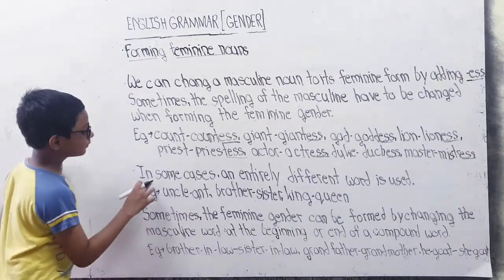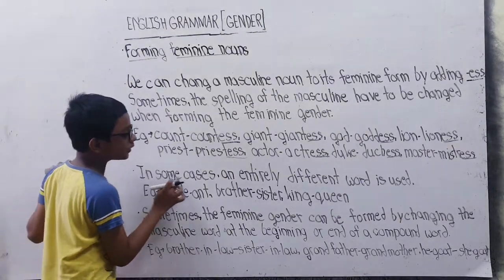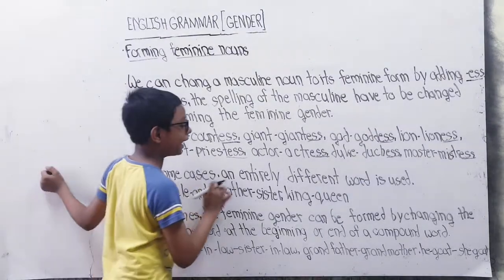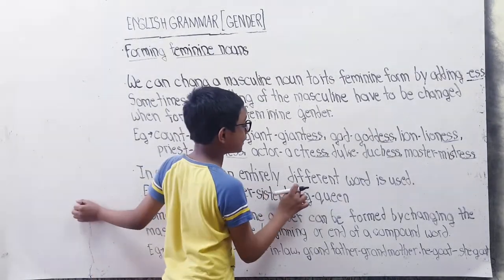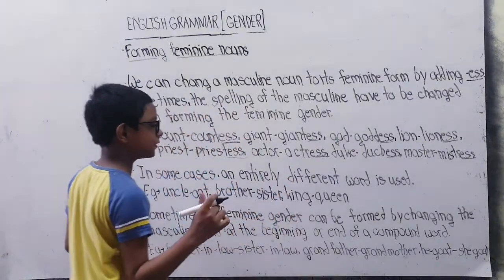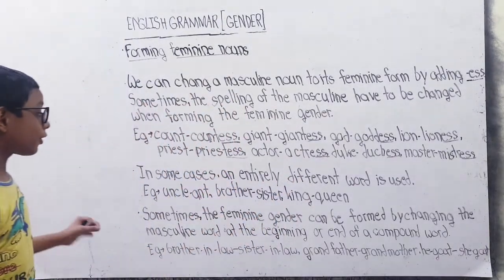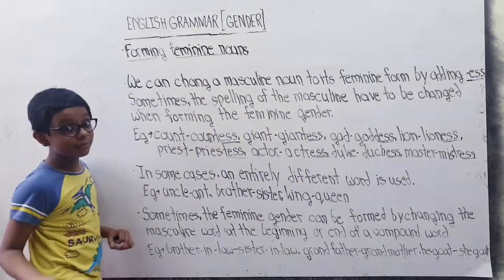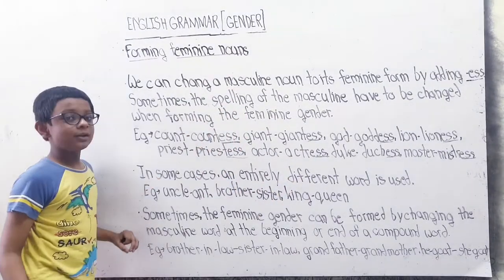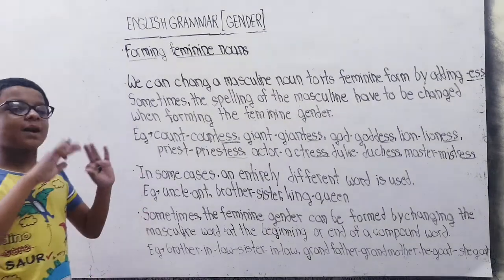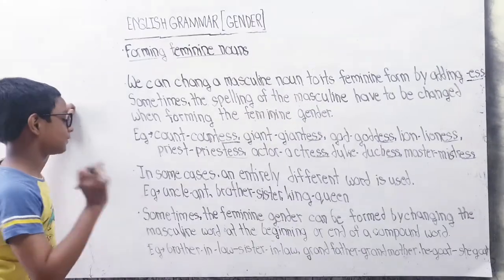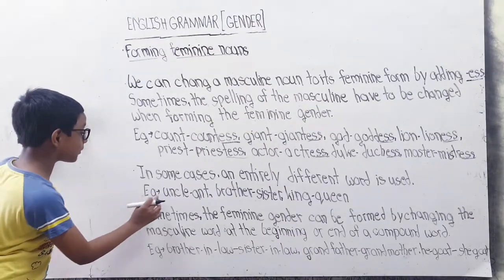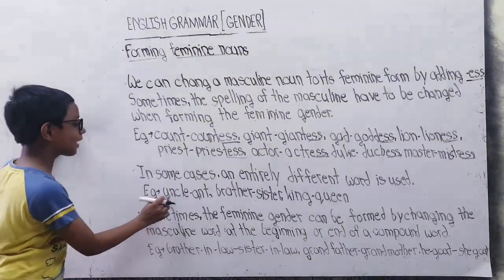In some cases, entirely different words are used for feminine nouns. If we make feminine nouns, then it will be different. For example: Uncle — Aunt.